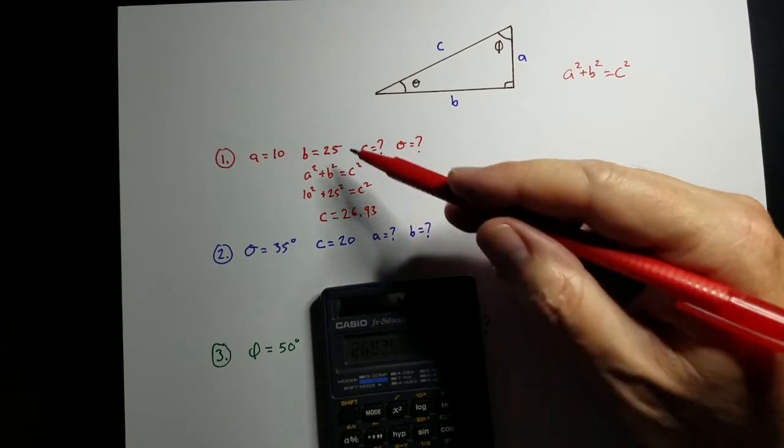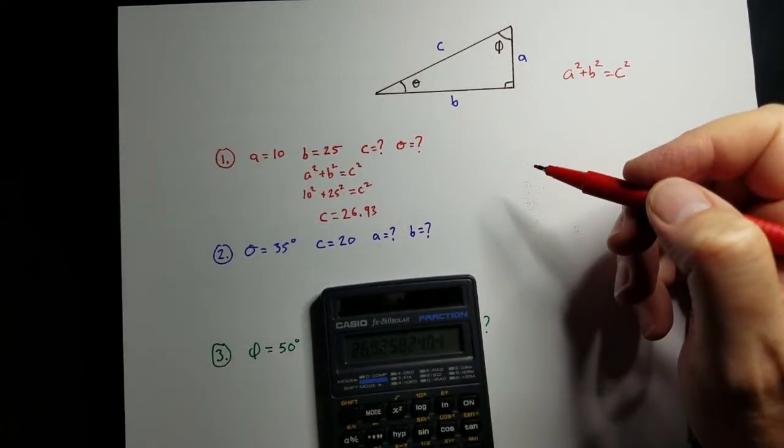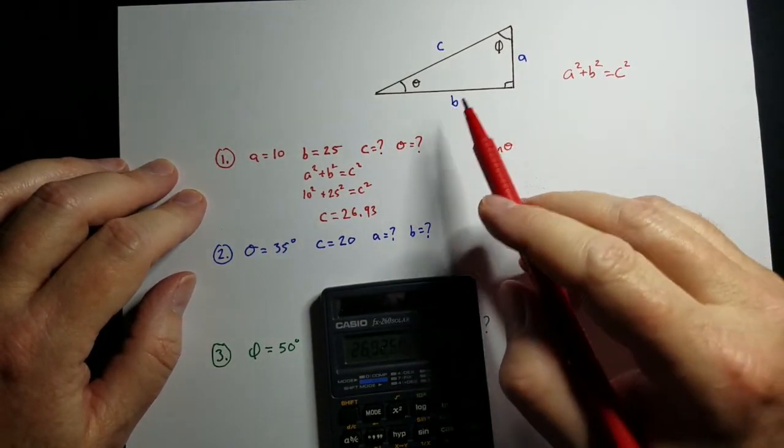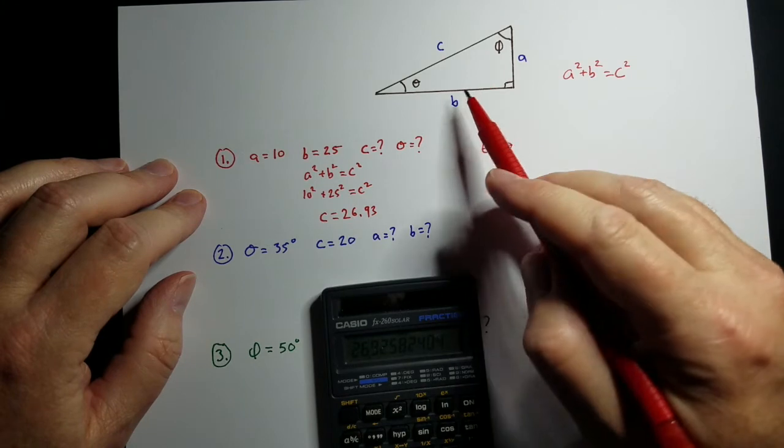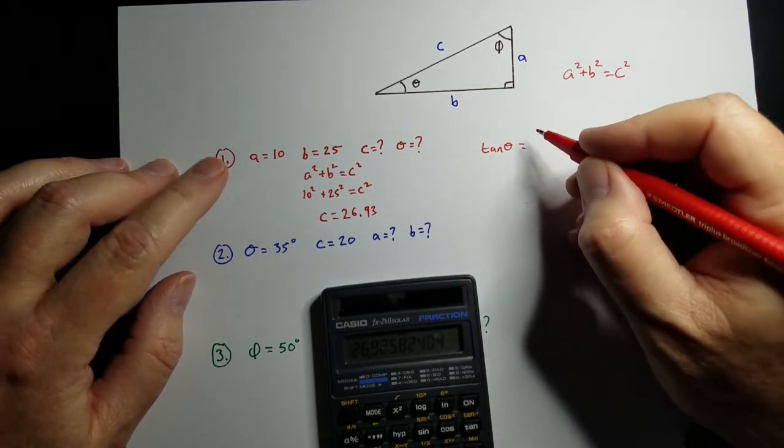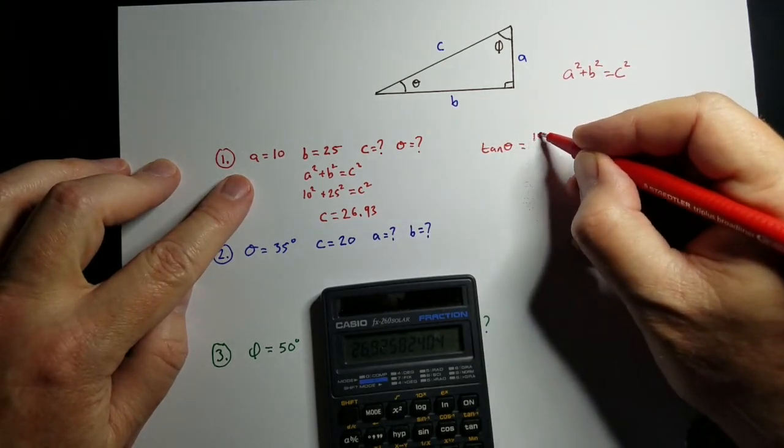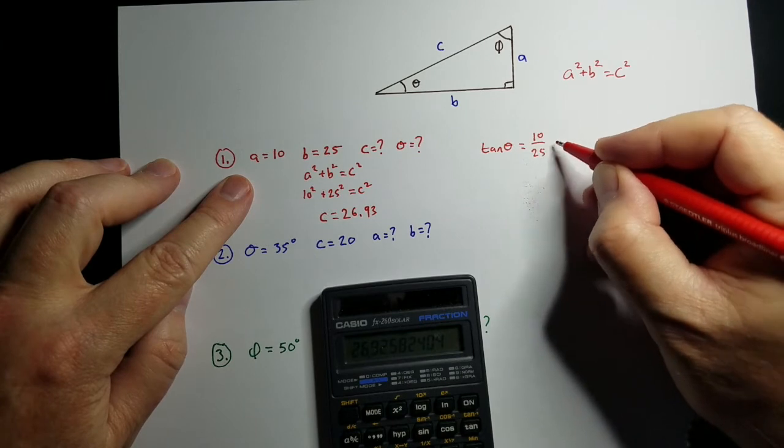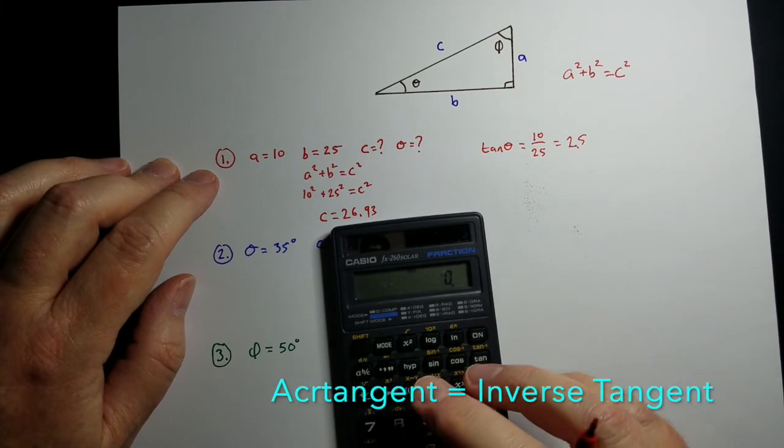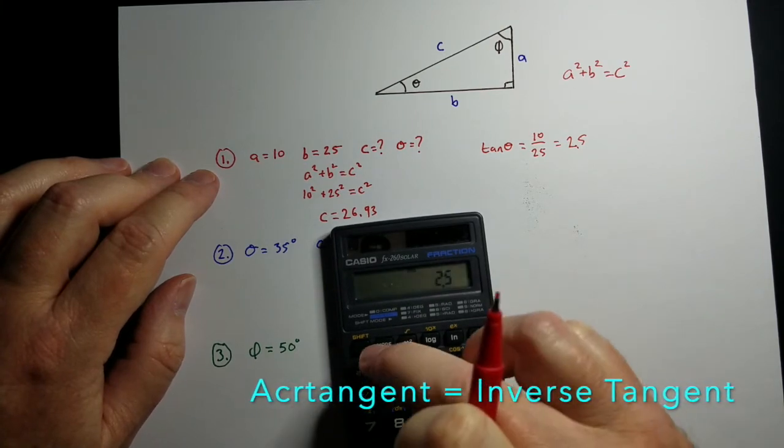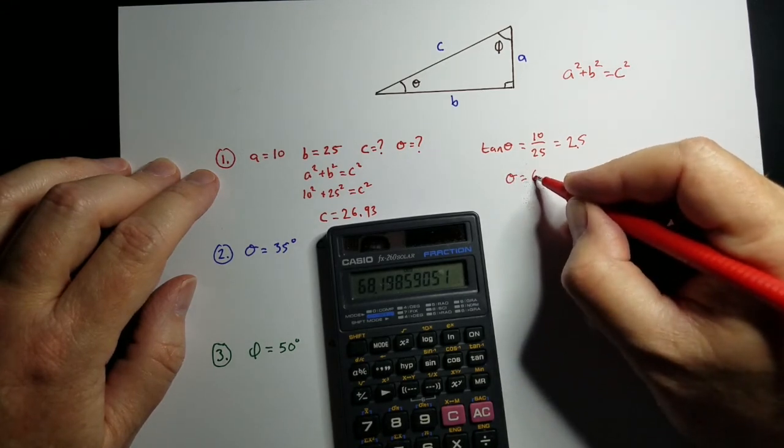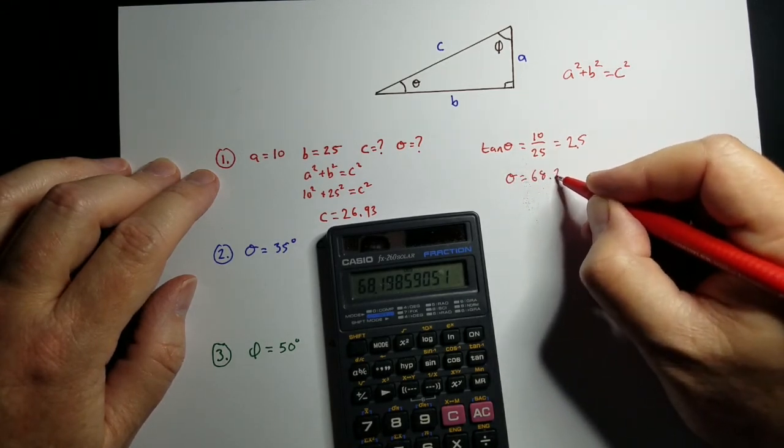Now for theta, since I know all three sides, I can technically use any trig function I want. But the best choice is tangent. The reason why is because we're given A and B, we're given the opposite and adjacent side. So that works best with tangent. So the opposite side was 10, adjacent side is 25. That's 2.5. We want to find the arctangent of that. So 2.5 arctangent gives me theta to be 68.2 degrees.